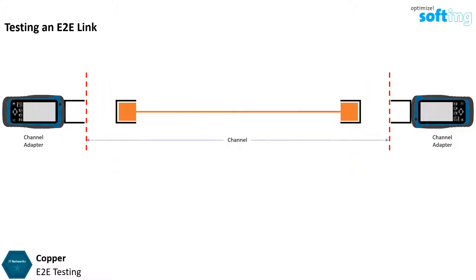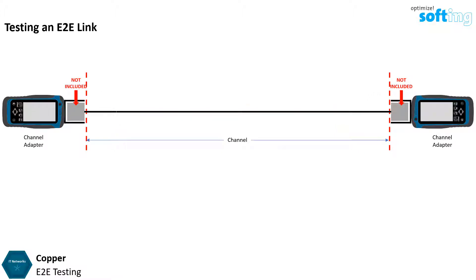In a conventional channel link measurement, patch cables are directly connected to channel adapters on the measurement device. The definition of a channel link measurement does not include the first and last connector of a link under test. Hence the plug of the patch cable that is inserted into the tester will not be tested. For an end-to-end link configuration, this would mean that any field terminated connectors will not be included in the measurement. Therefore, any field termination error other than a crude wire map fault would not be found.